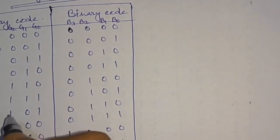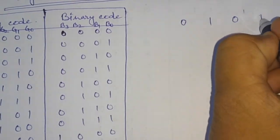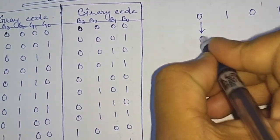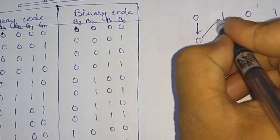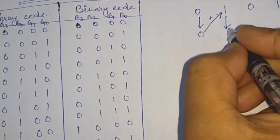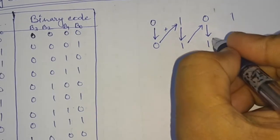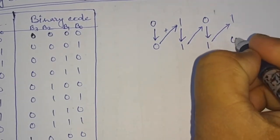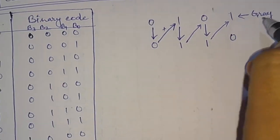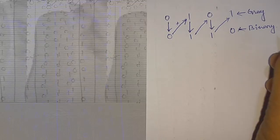Let us consider this gray code: 1 0 1 0. The MSB is written as it is — so we write 1. Now this 1 is added to the next bit 0, and the result is written: 1 plus 0 is 1. Then this 1 is added to 1 and we get 0, and this 0 is added to the next bit.